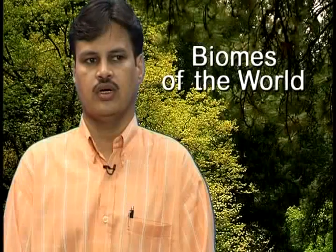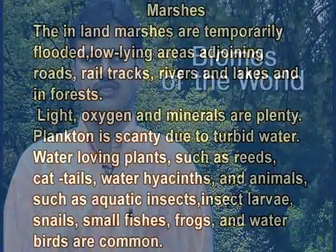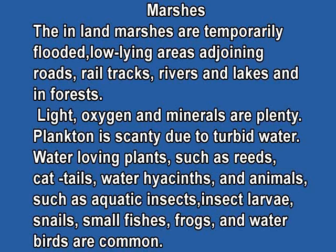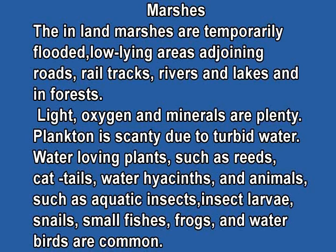Marshes are temporarily flooded and low-lying areas adjoining roads, rail tracks, rivers, lakes, and forests. Light, oxygen, and minerals are plentiful. Planktons are scanty due to turbid water. Water-loving plants such as reeds, cattails, water hyacinths, and animals such as aquatic insects, insect larvae, snails, small fishes, frogs, and water birds are common.